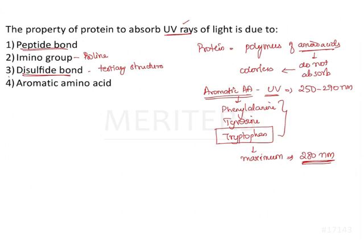Therefore, the property of amino acid is reflected as a property of the protein — among the amino acids, aromatic amino acid has the ability to absorb ultraviolet light. The property of protein to absorb UV rays of light is because of the presence of aromatic amino acids. The remaining options — peptide bond and disulfide bond — denote bonding seen in various protein structures and do not have a role in UV absorption. Similarly, the imino group is specific to proline and does not have the property of absorbing ultraviolet light. So it is only the aromatic amino acid that has this ability, and therefore the right answer is aromatic amino acid.